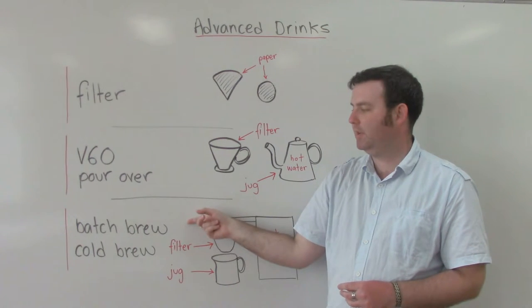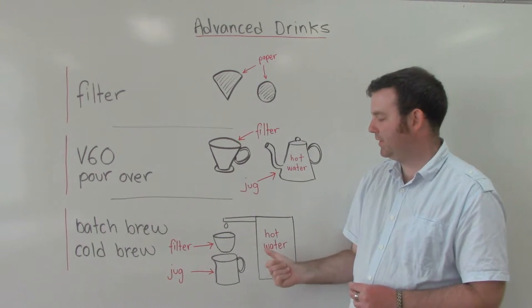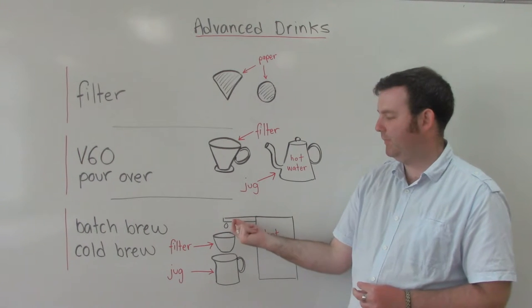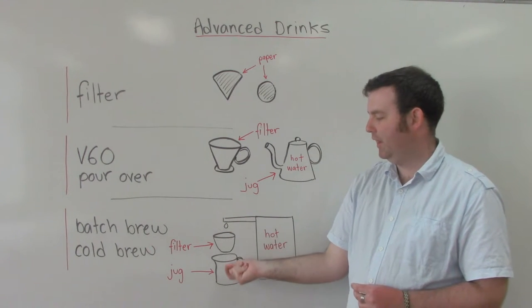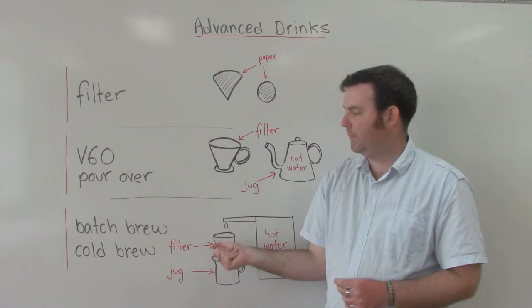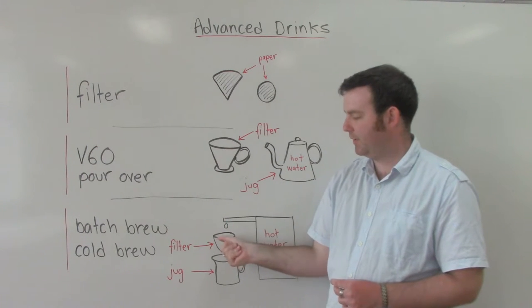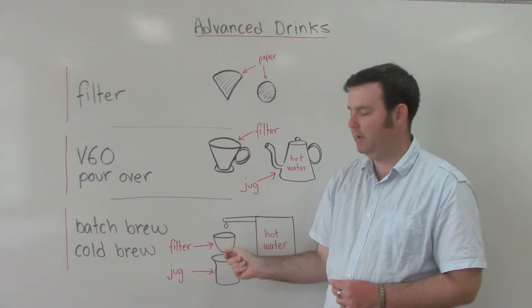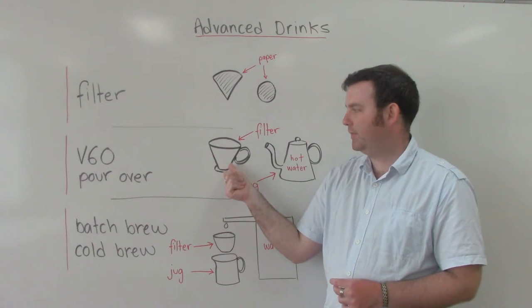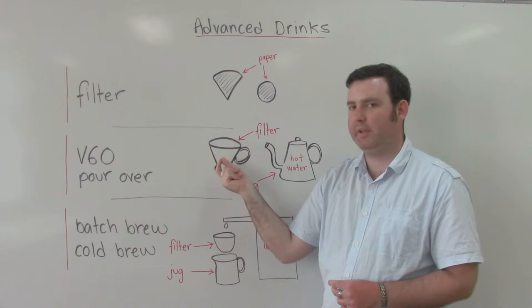The next drink is called a batch brew. So this is a similar process to the V60, but this is a machine. Hot water is on the side here that runs through the filter where the coffee is and lands in the jug down the bottom. The batch brew is a stronger flavor than the V60 because the water sits in here longer before it runs through into the jug. This V60, the water runs through a bit quicker so it's a weaker flavor.